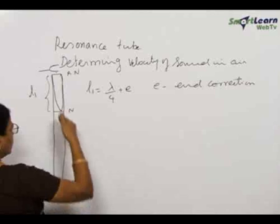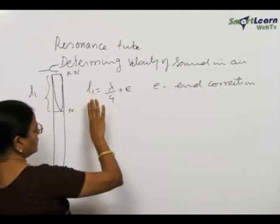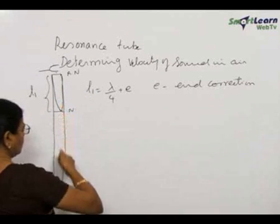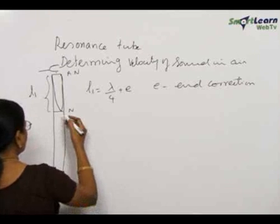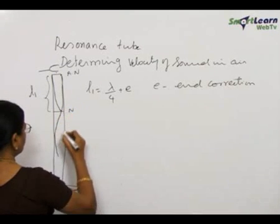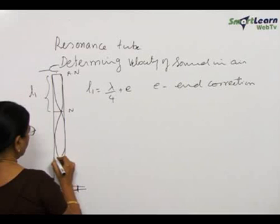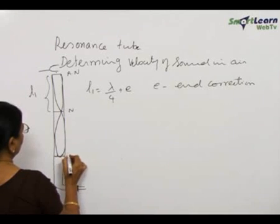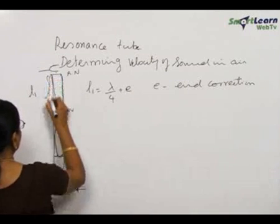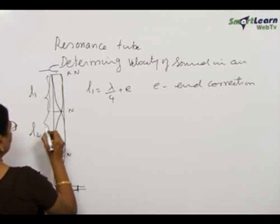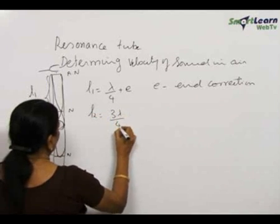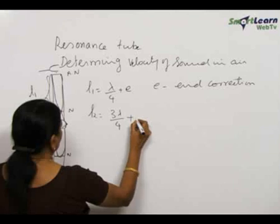Now you go on draining water. Do this 2 or 3 times to get the average value of L1. Then drain some more water — approximately 3 times L1 — and again resonance will be heard. That means now we have one and a half loops, with a node at the bottom. This distance is measured as L2, where L2 = 3λ/4 + E.